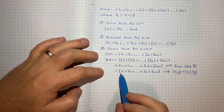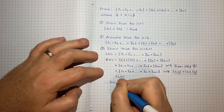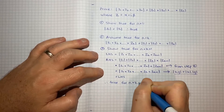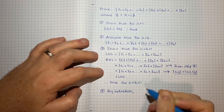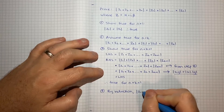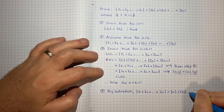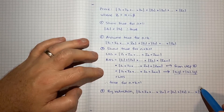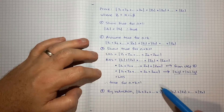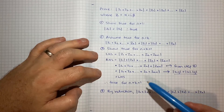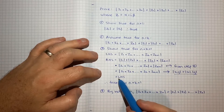Once we get there, we can see that what we've shown is equal to the left hand side. Therefore what we're trying to show is true for n equals k plus 1. That leaves our final step where we can say by induction, the modulus of z1 times z2 times all the way up to zn equals the modulus of z1 times the modulus of z2 times the modulus of zn. In the grand scheme of proofs by induction this is fairly straightforward. The key was expanding the right hand side and simplifying it into the format of the left hand side.